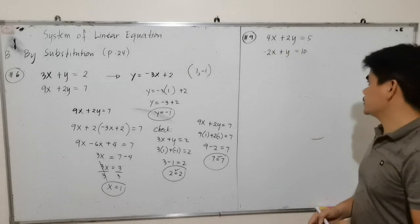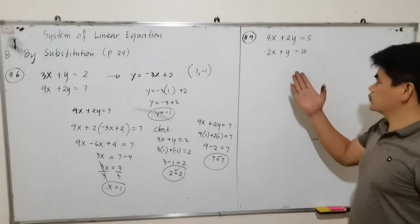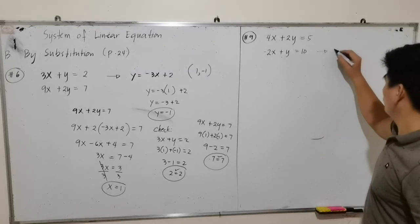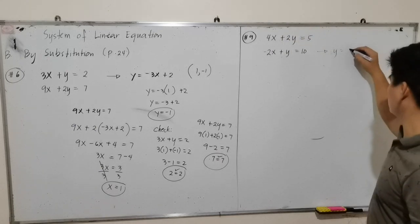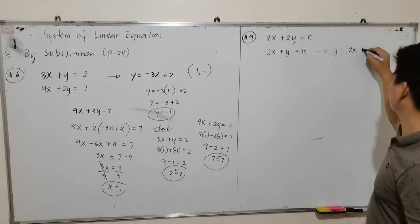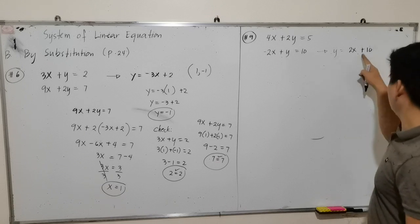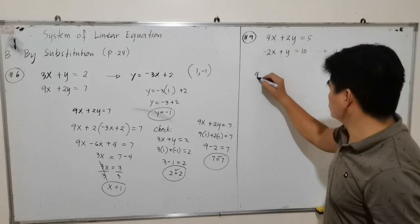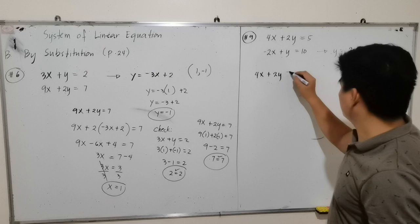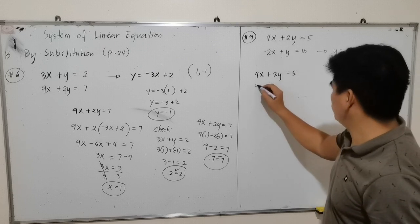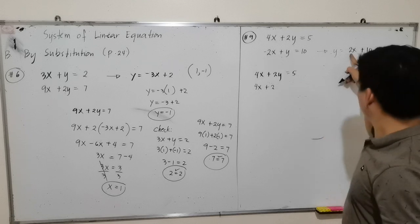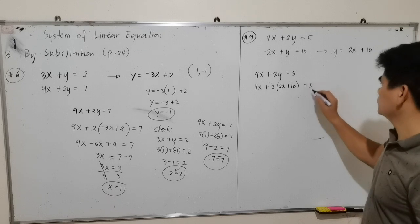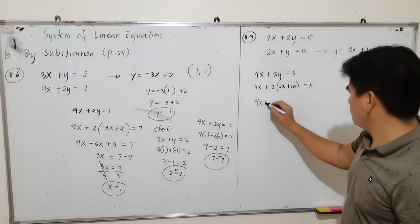For example 9, we have 4x plus 2y equals 5 and negative 2x plus y equals 10. I will choose equation number 2 because it is easier to isolate y. From equation 2: y equals 2x plus 10, by transposing negative 2x. We substitute this value of y into the first equation: 4x plus 2y equals 5.